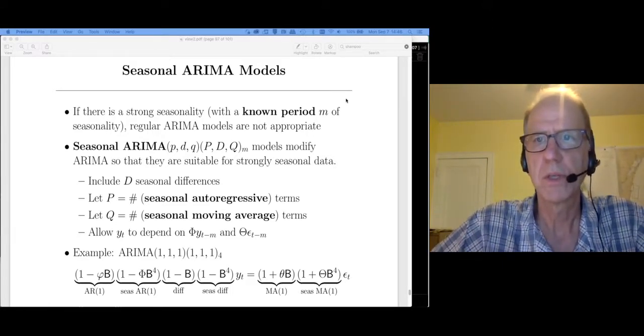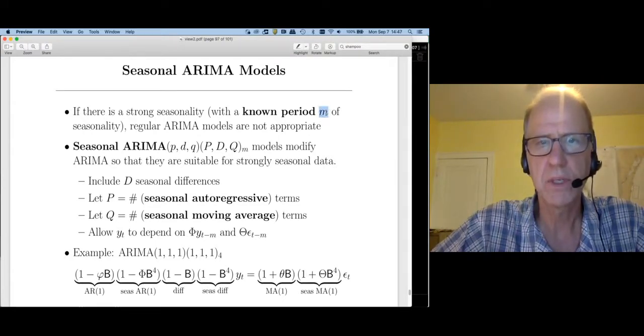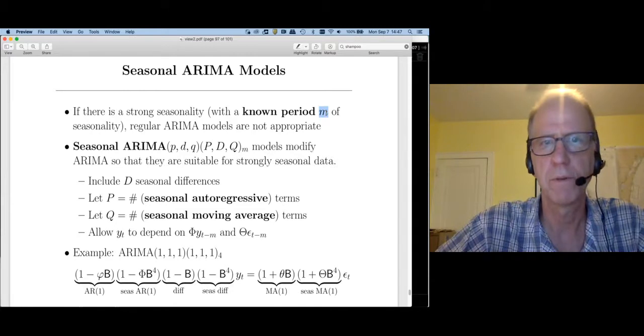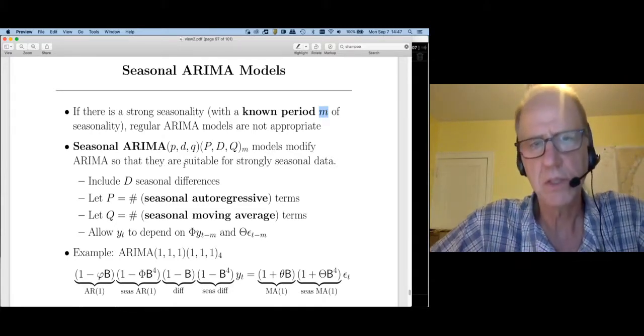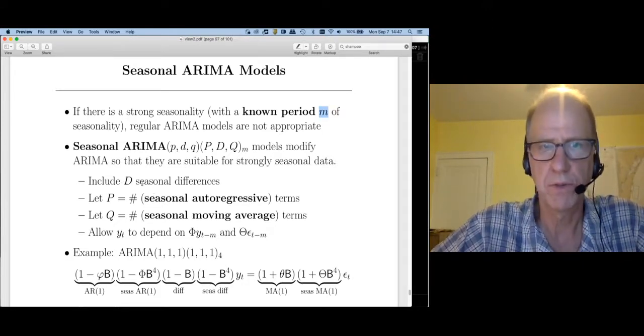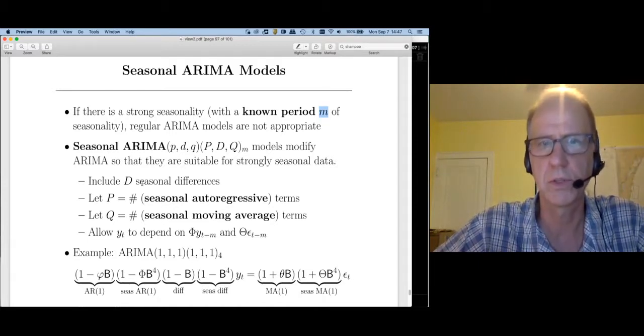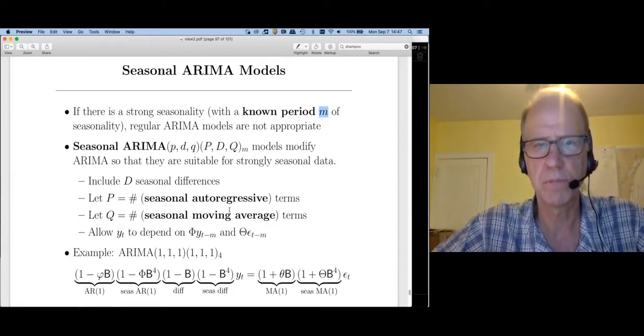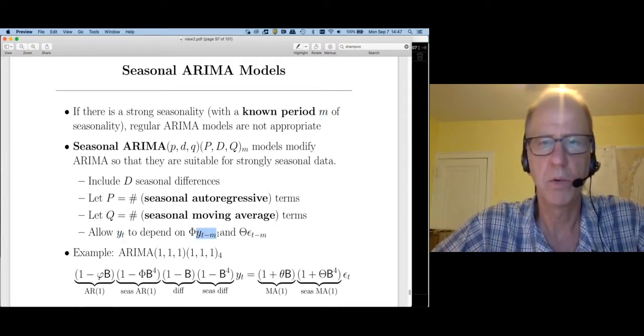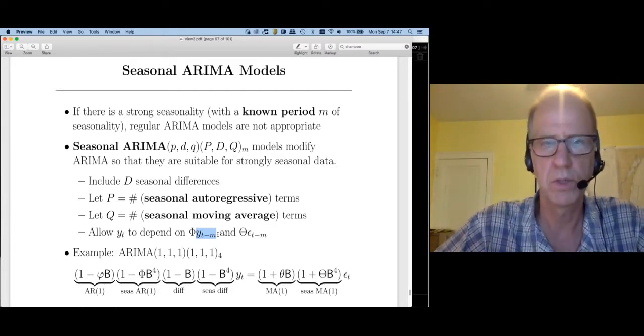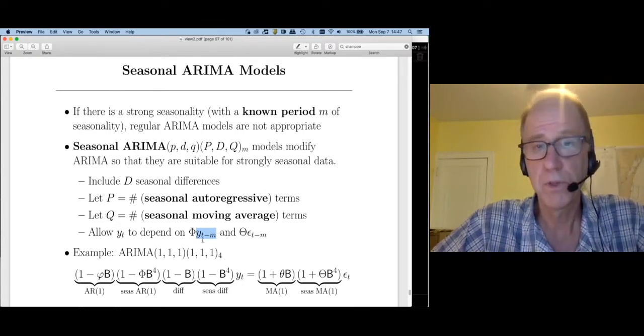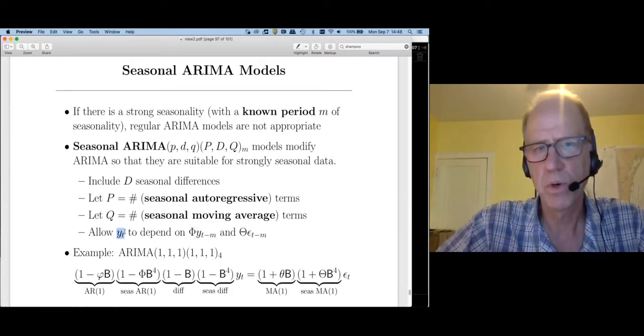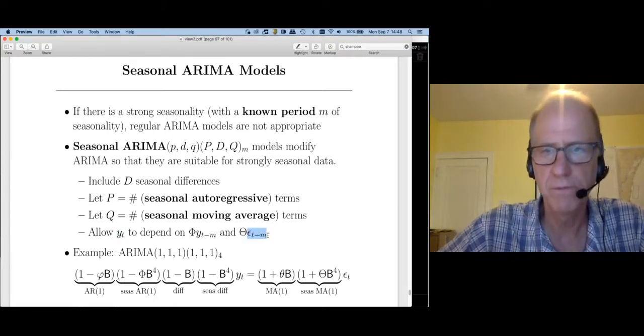As always I'm going to use the variable m to denote the length of the seasonal period. So if we have quarterly data m is going to be 4. If we have monthly data m would be 12 and so forth. The basic idea of a seasonal ARIMA model is that we're going to have seasonal differences rather than just first order or second order differences. So this could be a difference of order m. Then we're going to include seasonal autoregressive terms. So y sub t could depend on y sub t minus m. In other words first quarter this year could be predicted by first quarter last year. We'll also include a seasonal moving average. So my sales first quarter this year could depend on the error from first quarter last year.